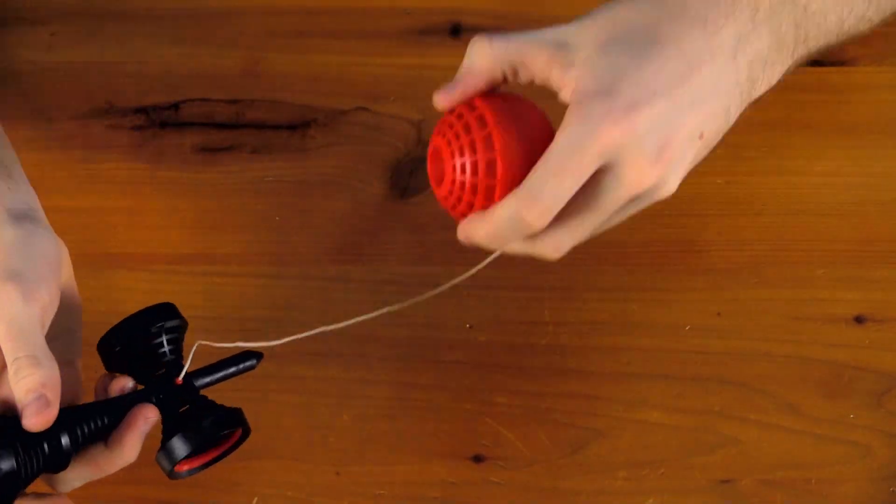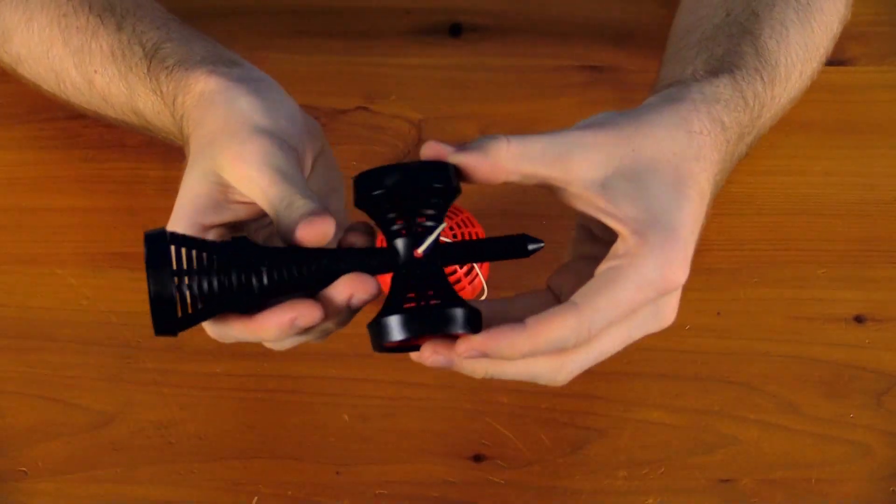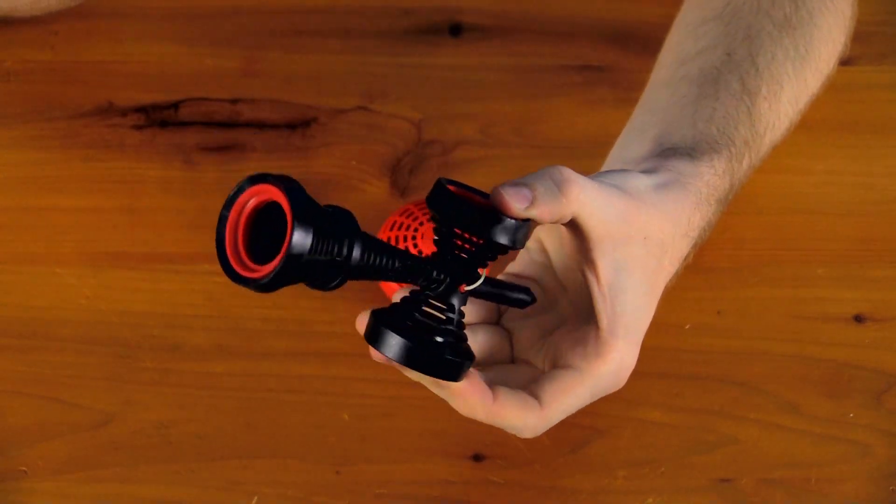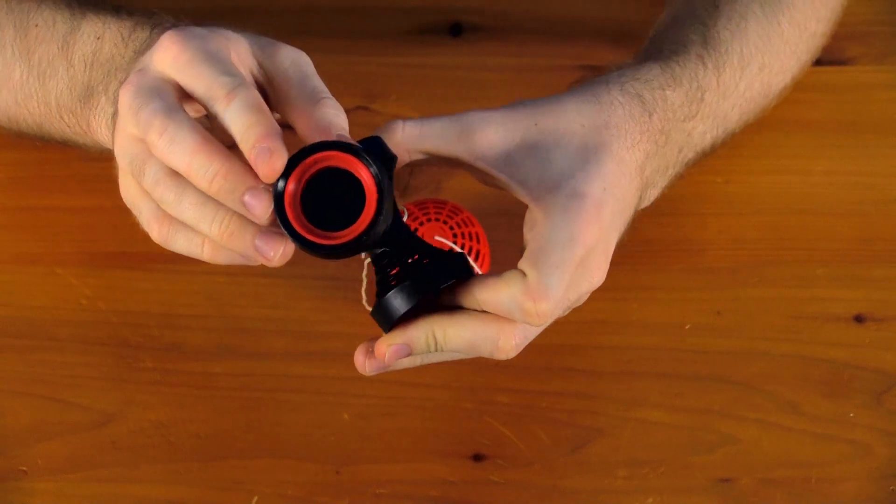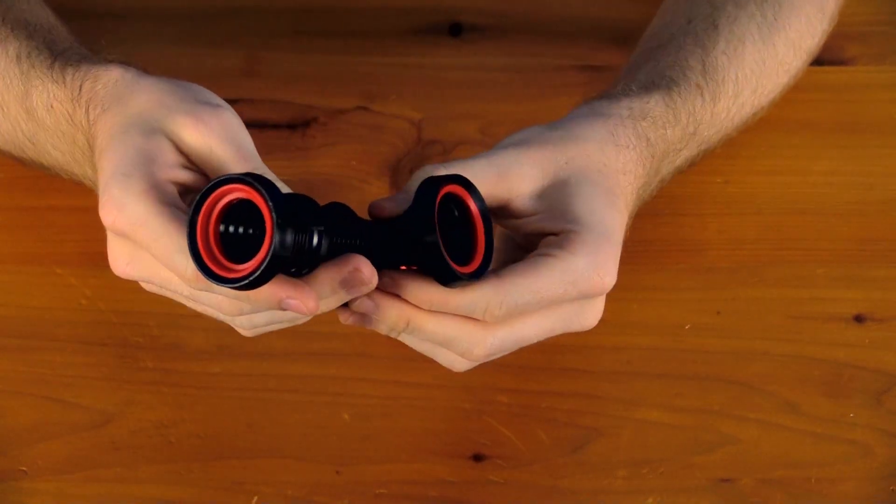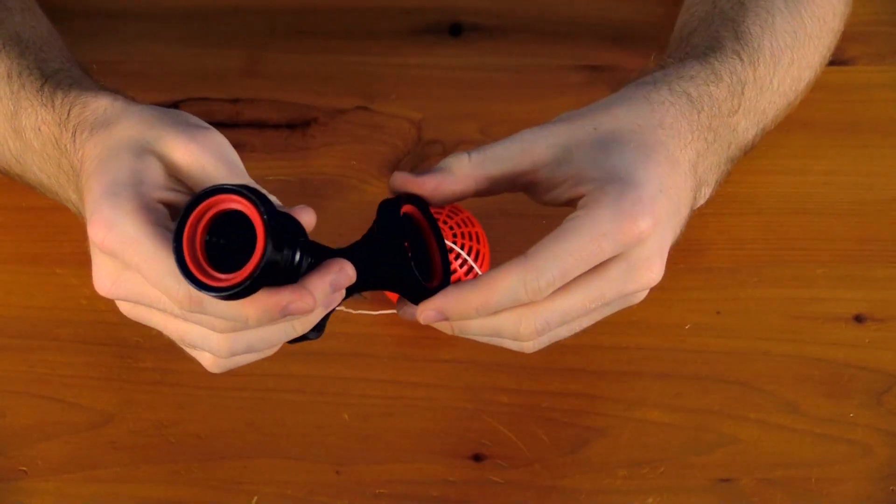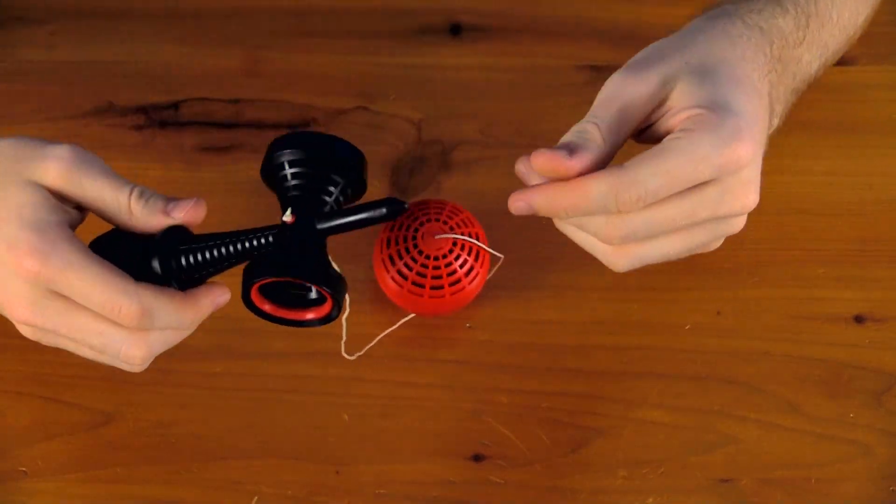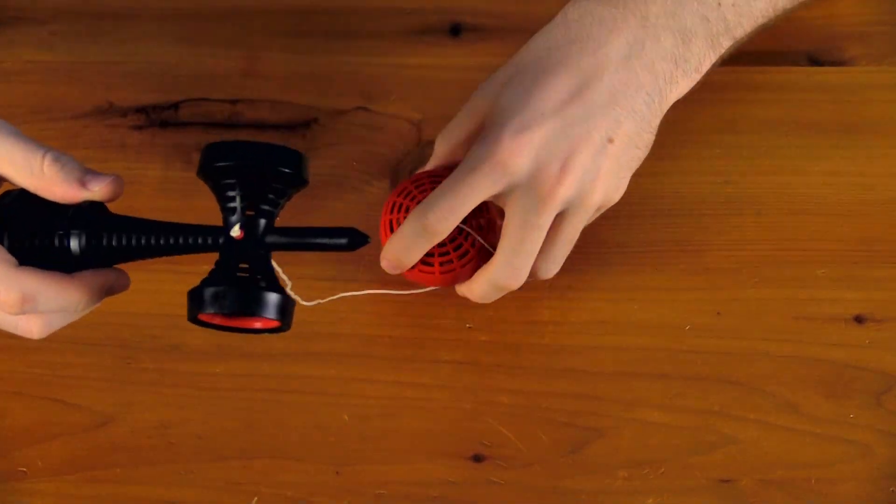You'll also notice that the base cup is slightly larger than a standard Kendama, and that allows you to balance the popular lighthouse trick a lot easier. It also makes learning some of the basic tricks a little bit easier as well. Moving up the Kendama you'll see that the tip, because it's plastic, it's not going to dull or break, which is really nice.